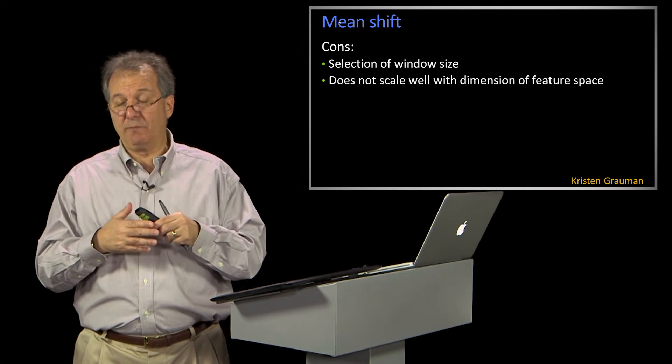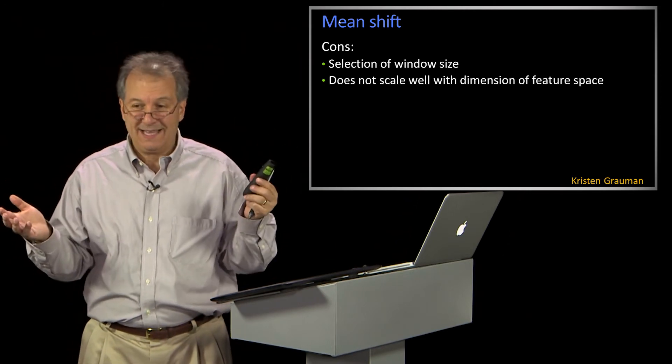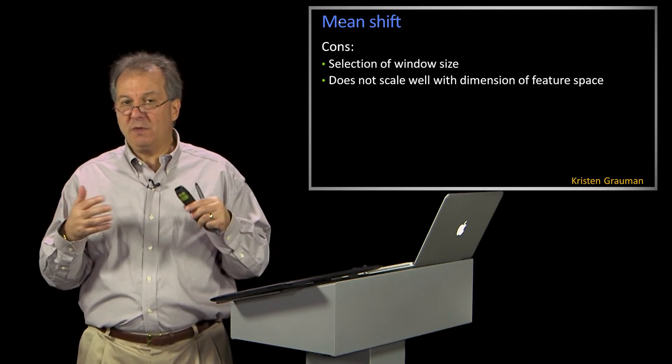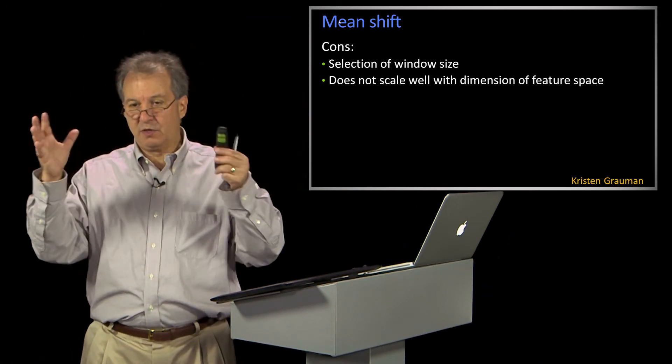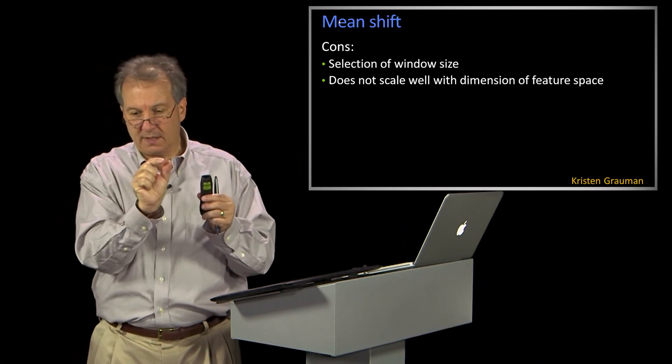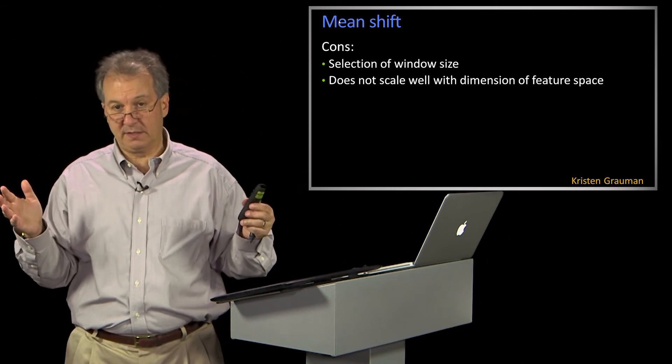Almost by definition, your feature space will be sparse. Because if you carved up every dimension into, say, 10 buckets...